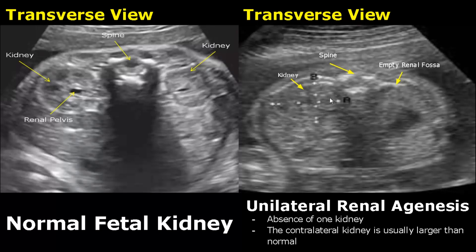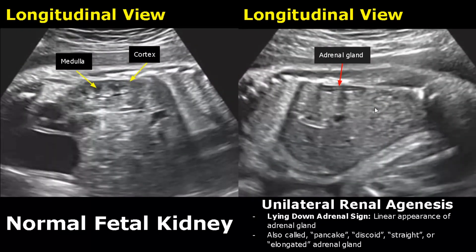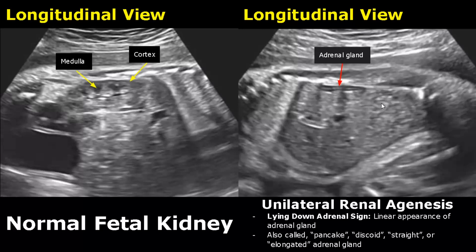In the lying-down adrenal sign, there is a linear appearance of the adrenal gland, which is a sign of renal agenesis. Here you cannot see any kidney — we only see the adrenal gland in a flat configuration. It is also called pancake, discoid, elongated, or straight adrenal gland.